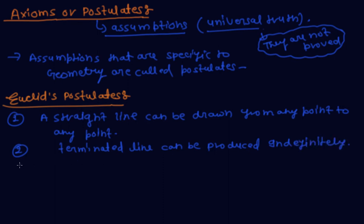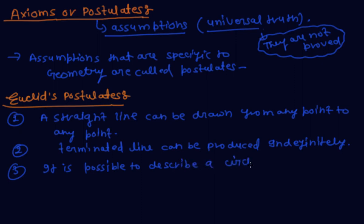The third postulate is: it is possible to describe a circle with any center and any distance.